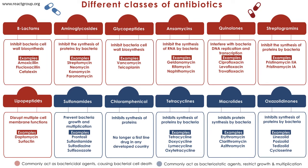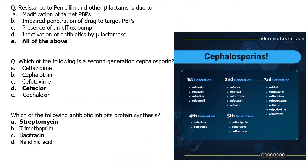This slide shows the mode of action of each group. Beta-lactams inhibit bacterial cell wall biosynthesis. Aminoglycosides inhibit protein synthesis. Glycopeptides inhibit bacterial cell wall biosynthesis. Rifamycins inhibit RNA synthesis by bacteria. Quinolones interfere with bacterial DNA replication and transcription. Antibiotics shown in red act as bactericidal agents causing cell death, while those in blue act as bacteriostatic agents restricting growth and multiplication.